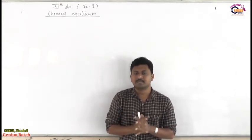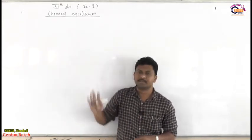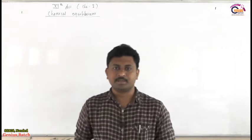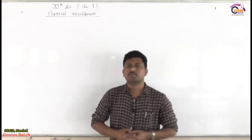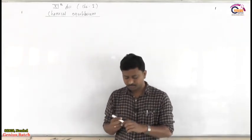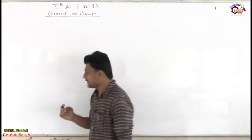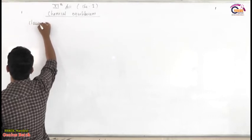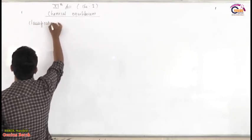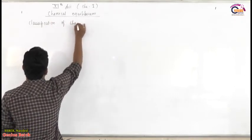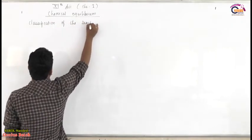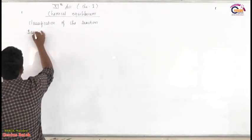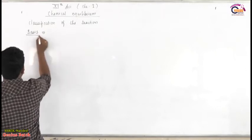We would start with the very first article in the chapter, Chemical Equilibrium. At the very beginning of the chapter, we would see classification of chemical reactions on the basis of some primary terms. So, we would proceed with classification of chemical reactions. In this classification, we need to select first a basis of classification, and on that basis, we would see different classes of reactions.